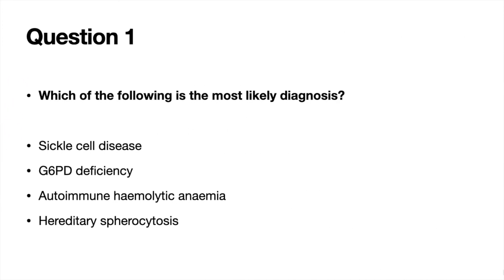Which of the following is the most likely diagnosis for this patient? Is it sickle cell disease, G6PD deficiency, autoimmune hemolytic anemia, or hereditary spherocytosis? Feel free to go back to the case for a re-read before continuing.